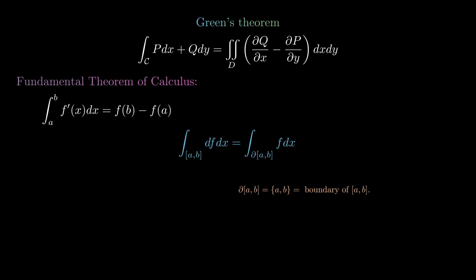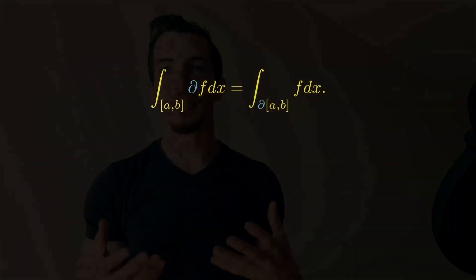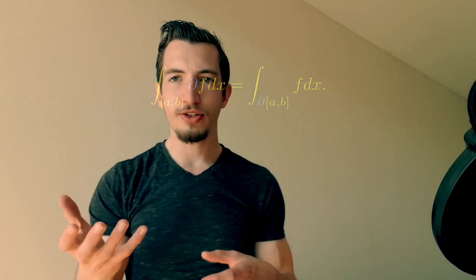The fundamental theorem of calculus now reads: the integral over [a, b] of df equals the integral over ∂[a, b] of f. We can replace df with ∂f since we're in the one-variable situation. Written this way, it becomes clear that integrals are not simply the opposite of derivatives — rather, the opposite of the derivative is the boundary of the region of integration.